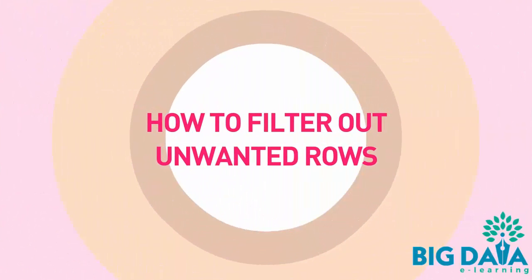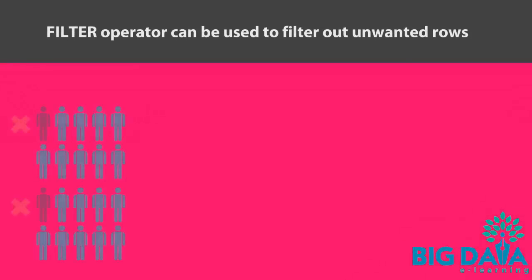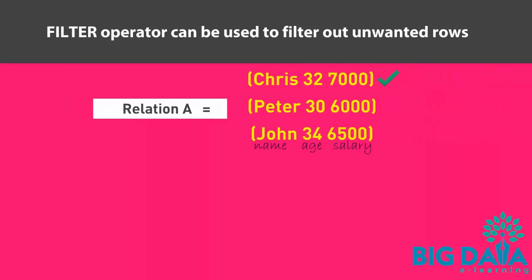How to filter out unwanted rows. The filter operator can be used to filter out, or remove, unwanted rows. In other words, it can be used to select only the tuples or rows that are needed. Suppose in our relation A, we need to include only those tuples that have a salary greater than 6,800. We can use the filter operator as specified in the below statement.